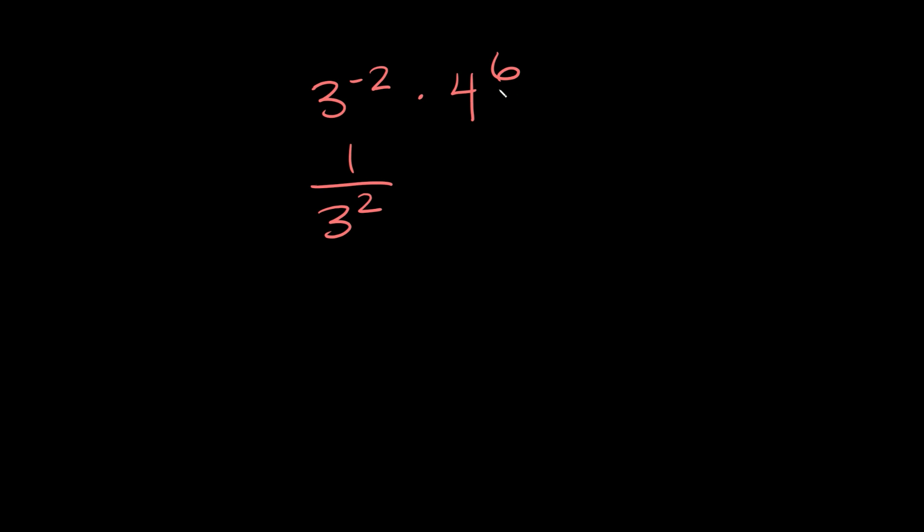Now 4 to the 6, there's a couple ways we can break this down. So 4 to the 6, we can rewrite that as either 4 squared and then that whole thing cubed, or we can flip these exponents - we can put the 3 on the inside and the 2 on the outside. We could also write it as 4 cubed squared.